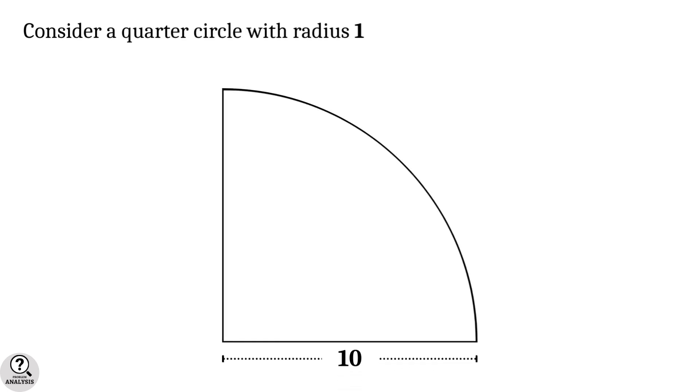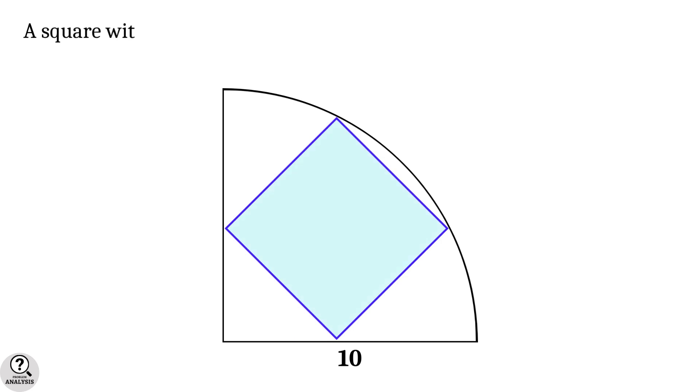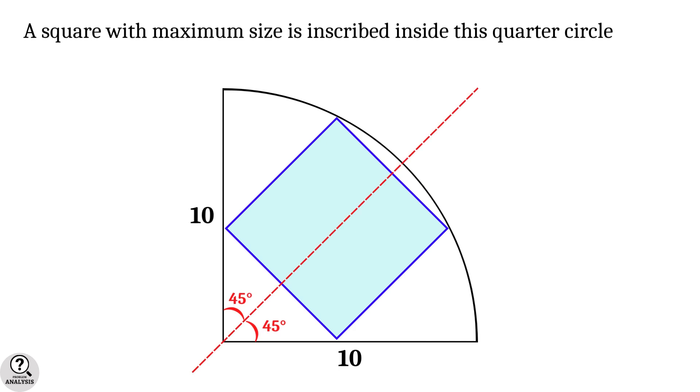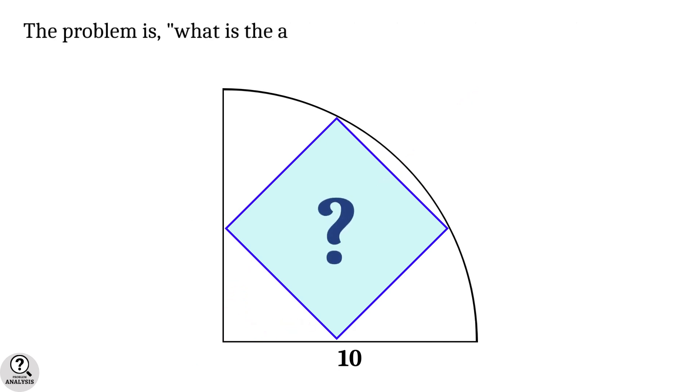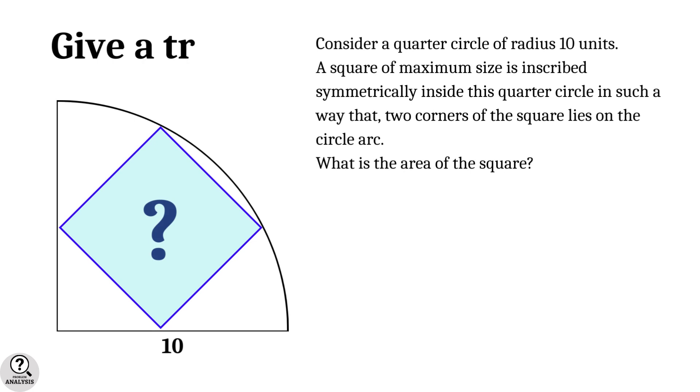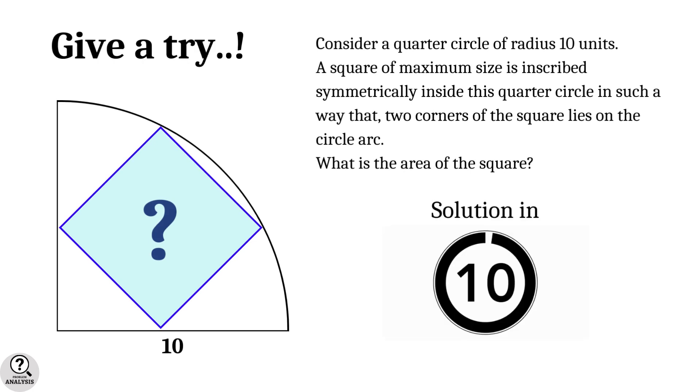Consider a quarter circle with radius 10 units. A square of maximum size is inscribed inside this quarter circle in such a way that the whole figure is symmetric along a 45 degree angle. What is the area of this square? If you want to attempt the problem, pause the video and give it a try.